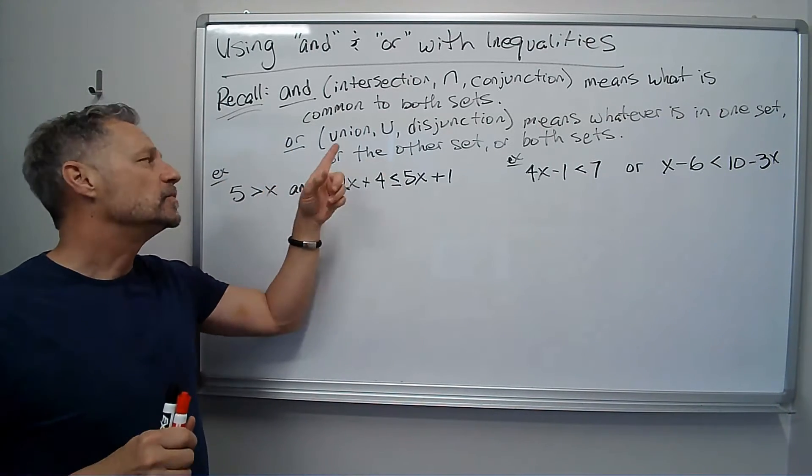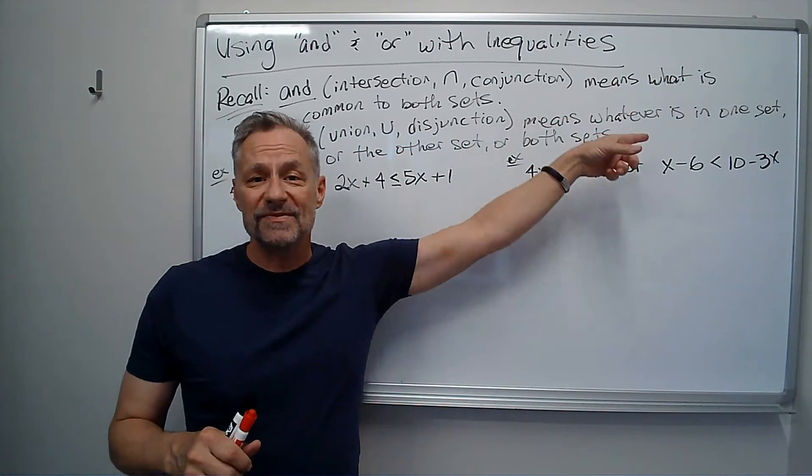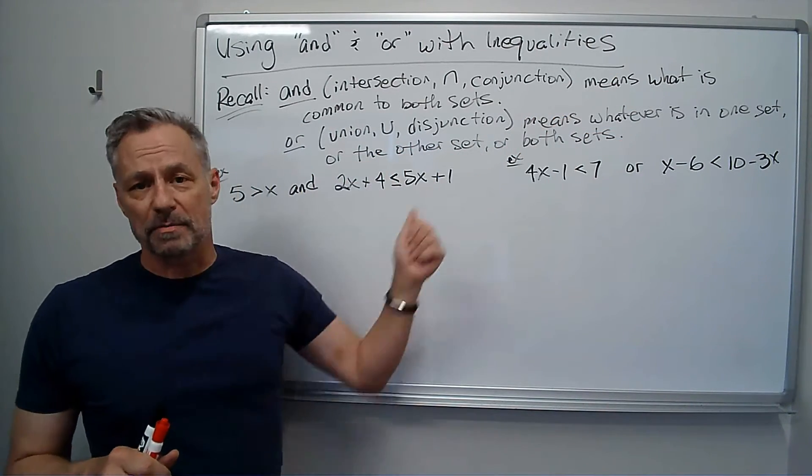OR, which sometimes they call union, there's the union symbol, or disjunction. It means whatever's in one set, or the other set, or in both sets.